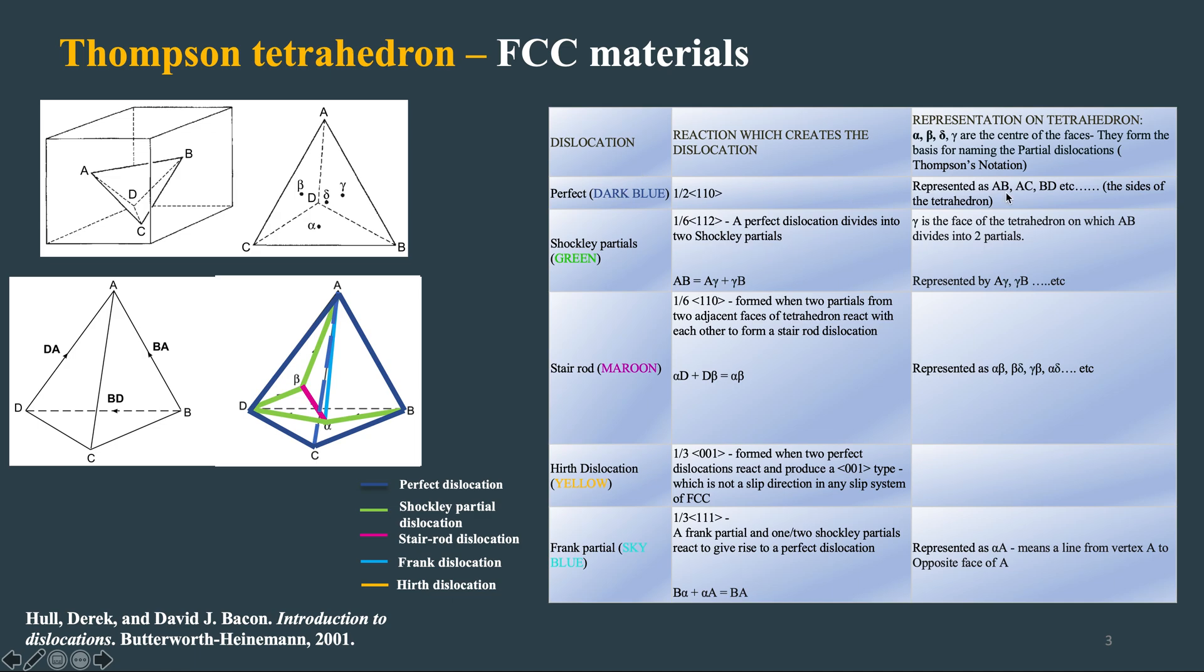And perfect is represented by these edges. Shockley partials are represented by some A gamma and gamma beta like that, alpha beta alpha A like that. So it's nothing but from the vertices to the centroid of this face. So this face is an equilateral triangle and this centroid you connect it to the vertices, that is a Shockley partial.